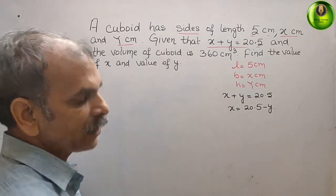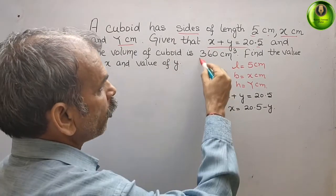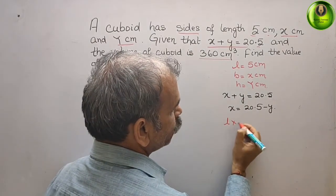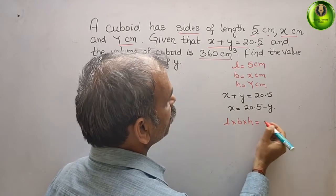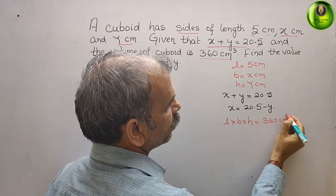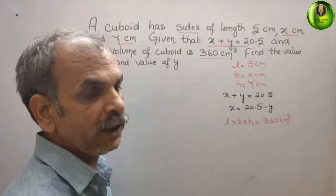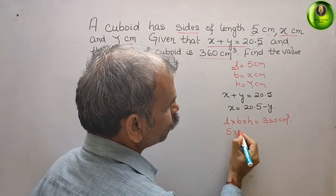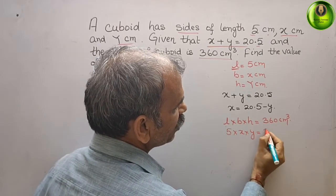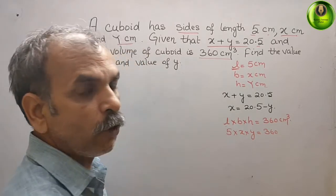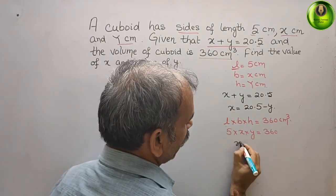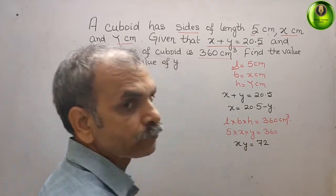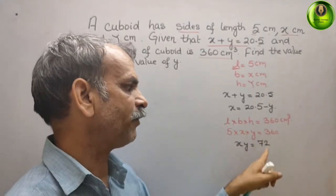The volume of the cuboid is 360 cm cubed. The formula for the volume of a cuboid is l times b times h, which equals 360. Substituting the known values: 5 times x times y equals 360, so xy equals 360 divided by 5, which is 72.